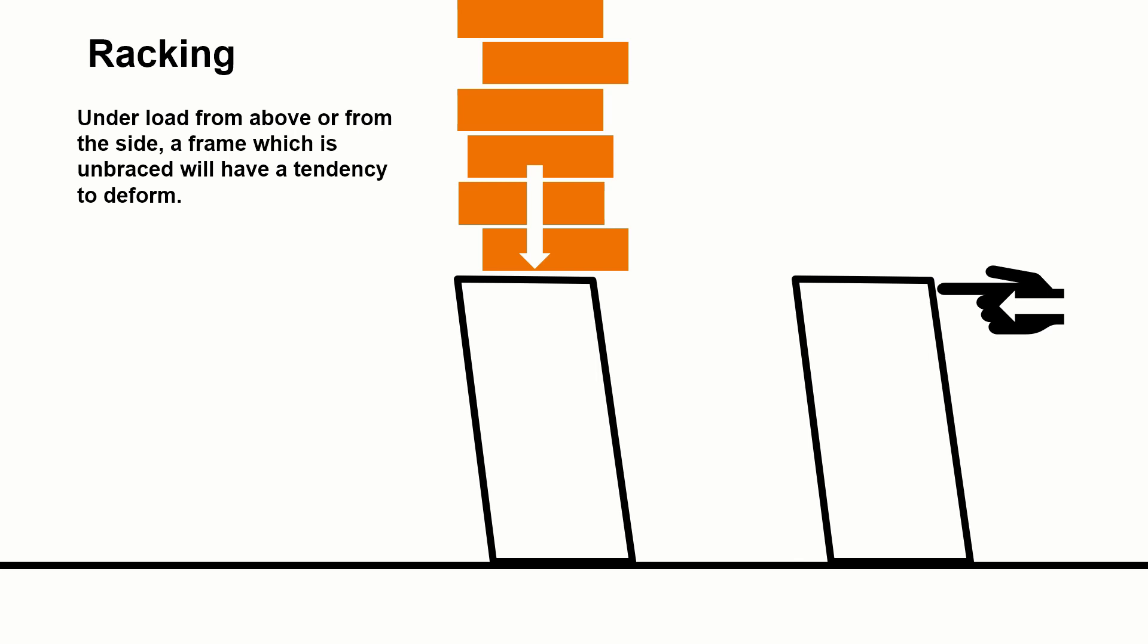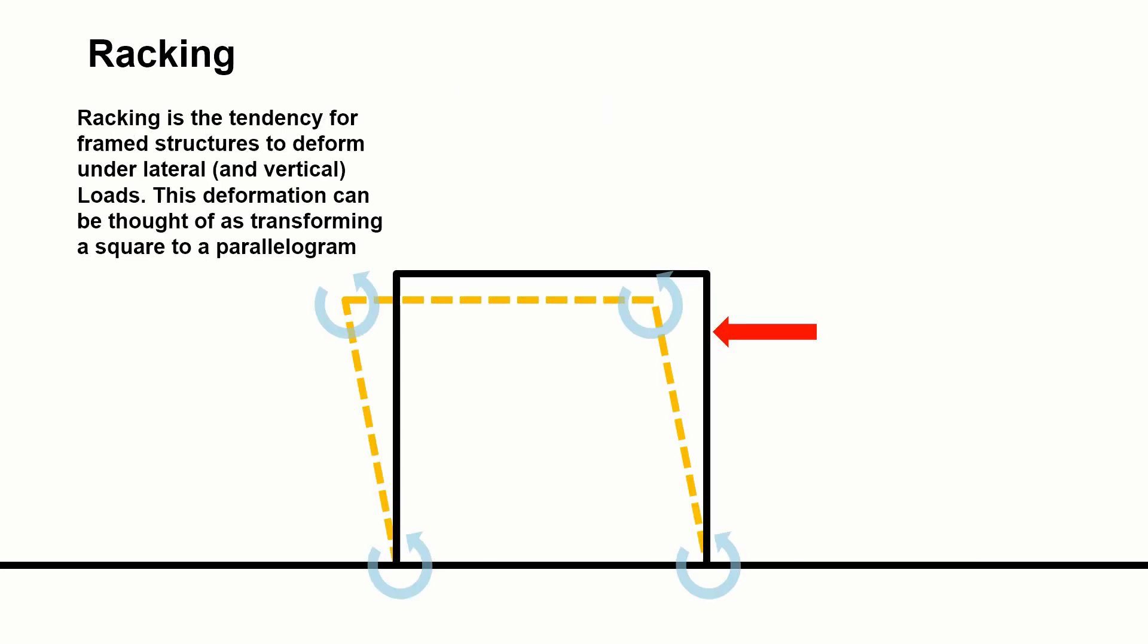When we have a load placed onto a building, we have to consider what the effect of that might be. If we took a simple frame structure and we placed a load on top of it, or to replicate a dead load or a live load, or we pushed it from the side to replicate a lateral load, the likely way that this would deform would be to shift sideways. We would refer to this as racking.